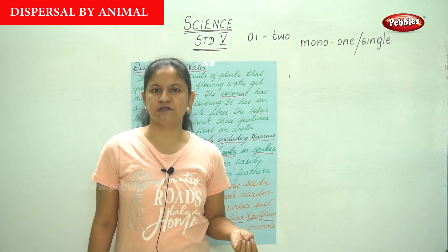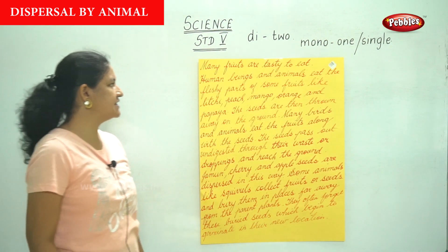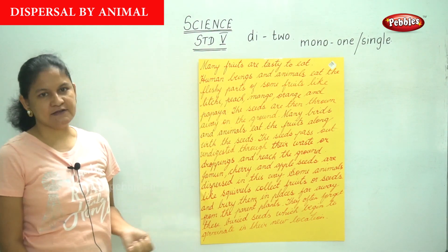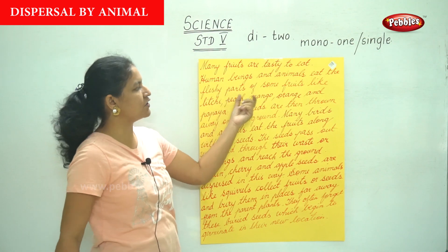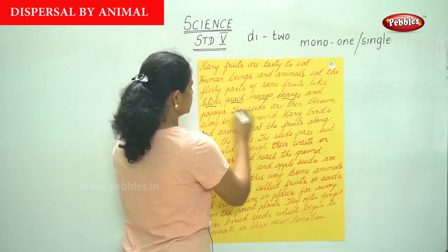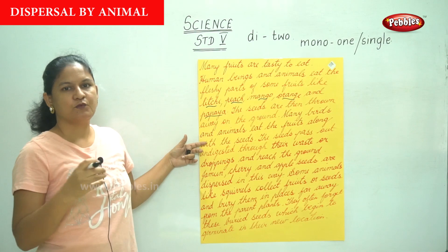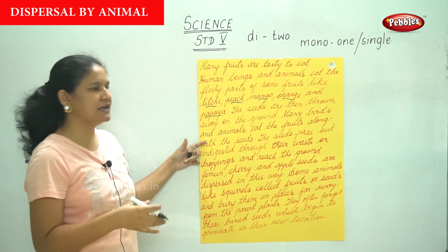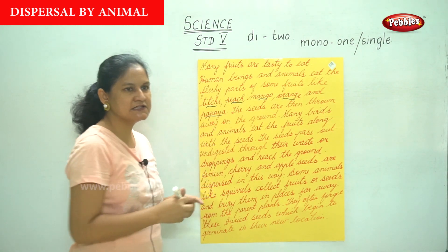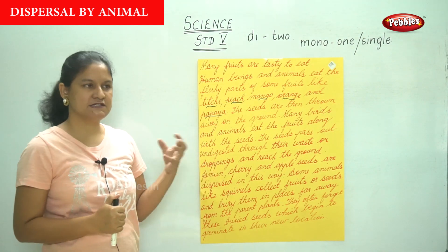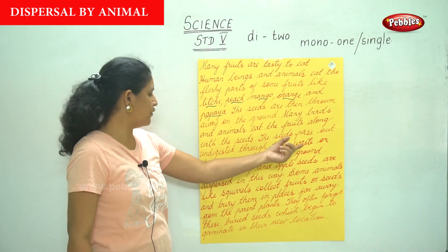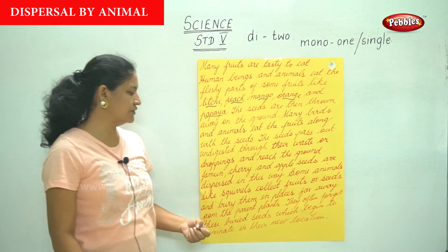Many fruits are tasty to eat. Human beings and animals eat the fleshy parts of some fruits like litchi, peach, mango, orange and papaya. Once they eat the fruits, the seeds are thrown away on the ground. Many birds and animals eat the fruits along with the seeds, and the seeds pass out undigested through their waste or droppings and reach the ground.